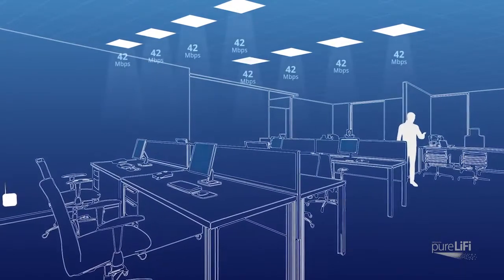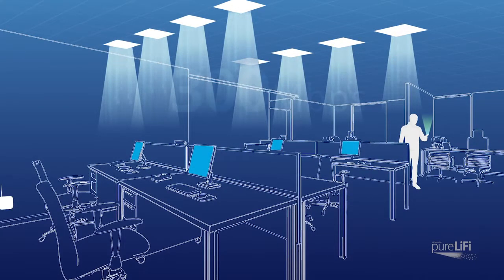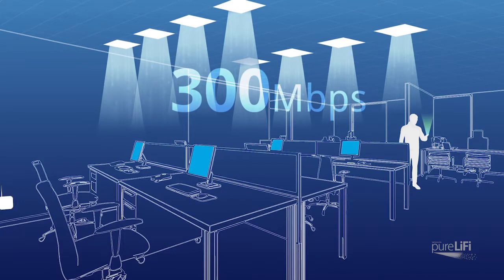However, with a Li-Fi network of lights that offer 42 megabits per light, even if you had only 8 lights in your room, those same 15 people could share more than 300 megabits per second. That's dense and fast wireless communication.